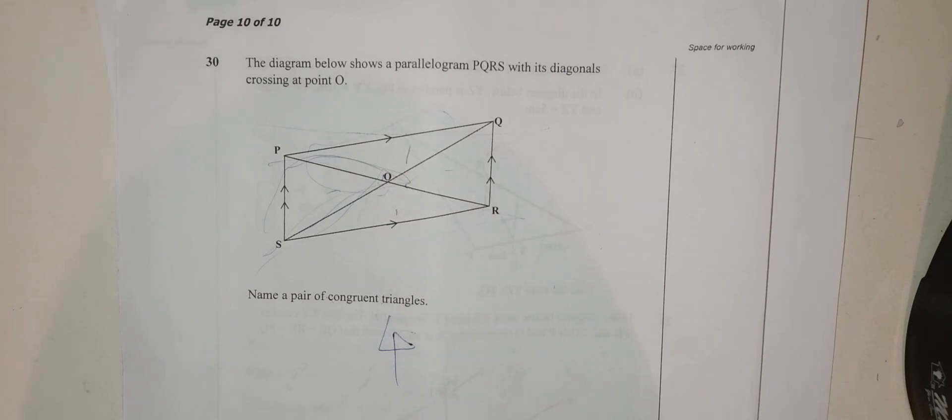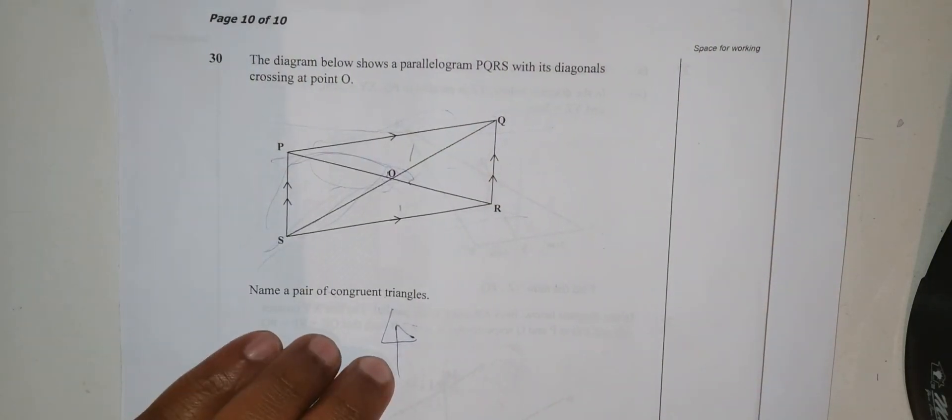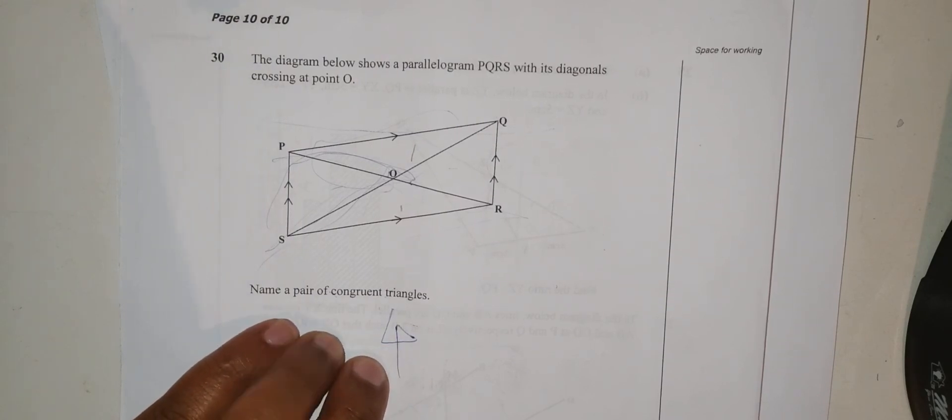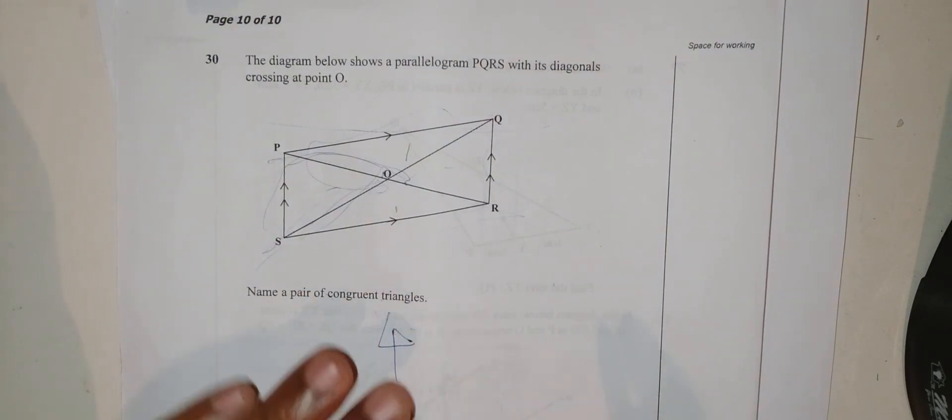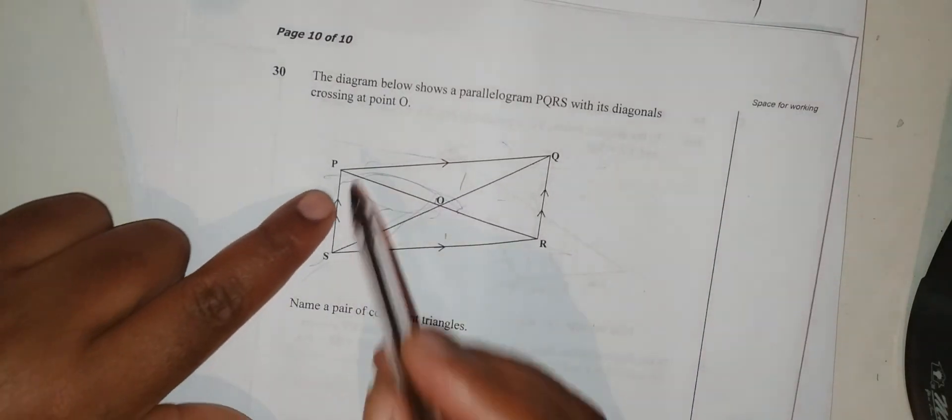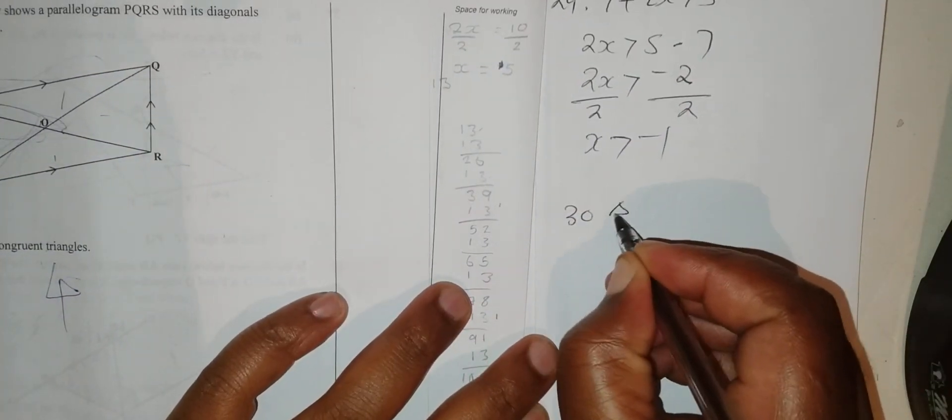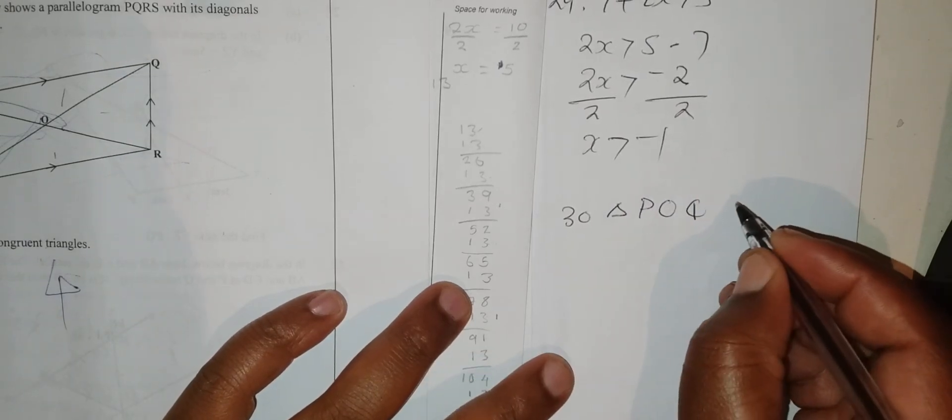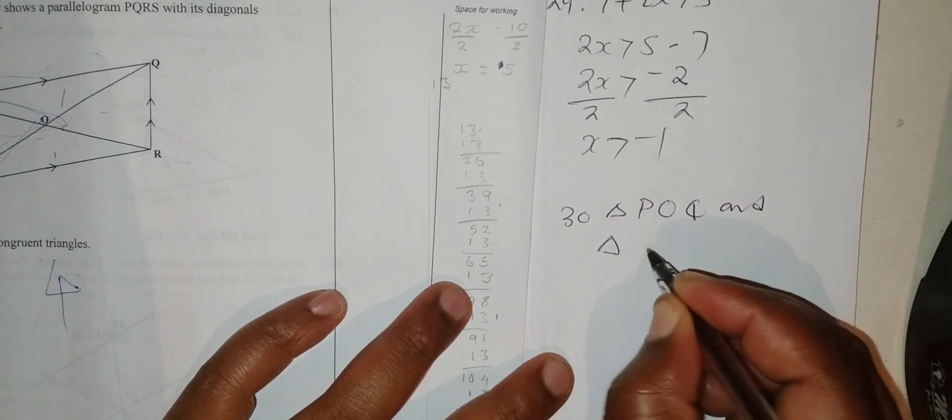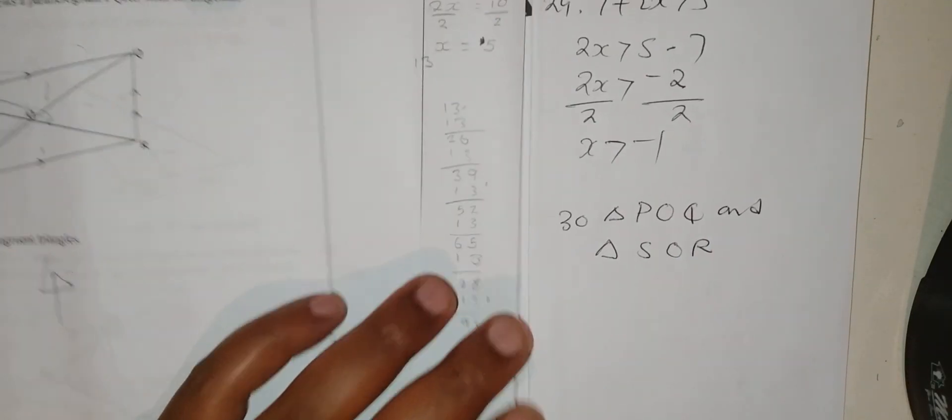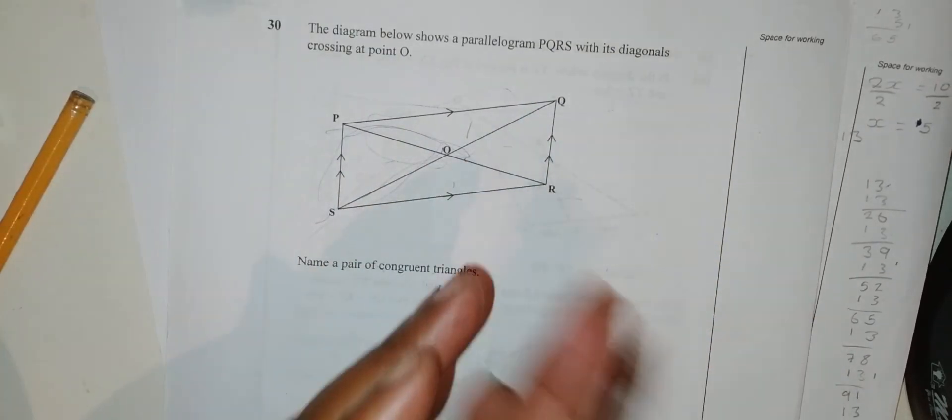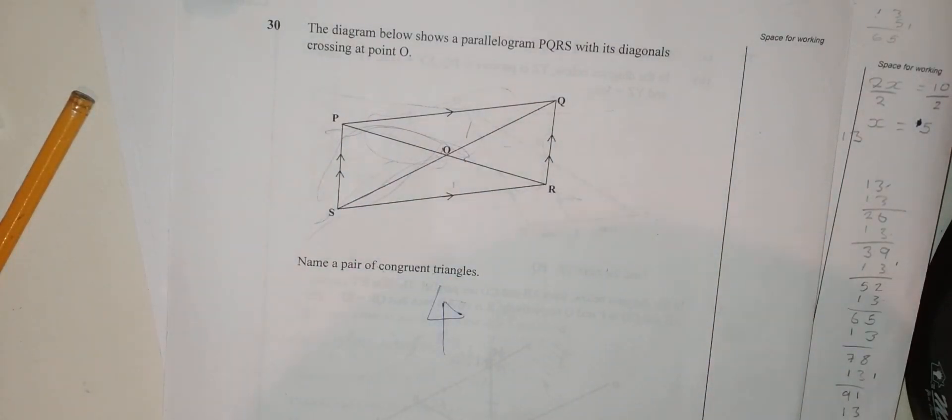Question 30: The diagram below shows parallelogram PQRS with diagonals crossing at O. Name a pair of congruent triangles. Triangles where if you flip them they should be able to fit. In this case, it is triangle POQ and triangle ROS. These are congruent. When you flip them, they can fit. All right, thank you so much. That's where we end for this presentation. Please share with your friends, keep on subscribing, keep on sharing, giving us comments, the thumbs up. All those are important so that we get your feedback. Thanks so much.